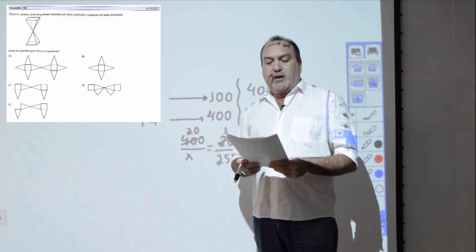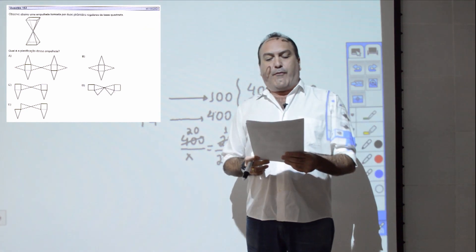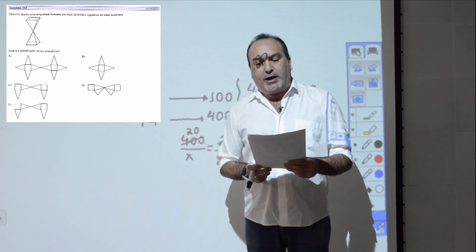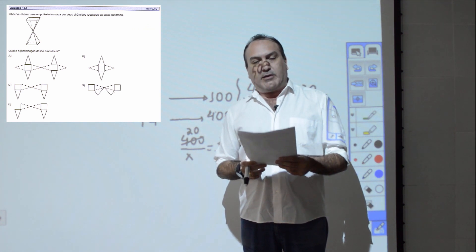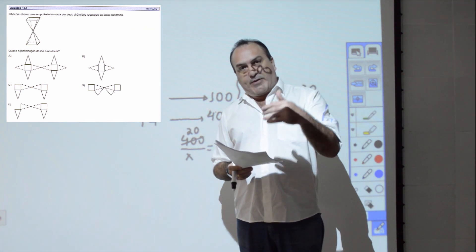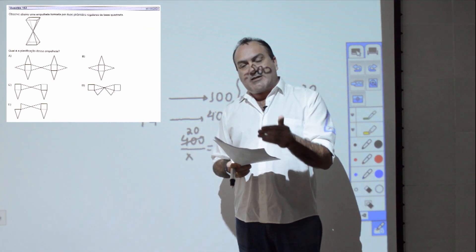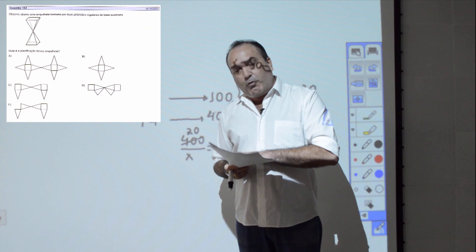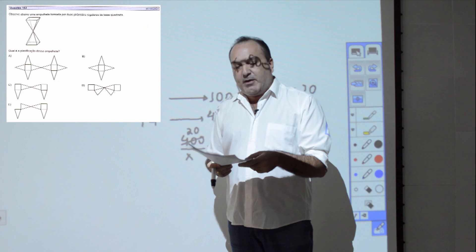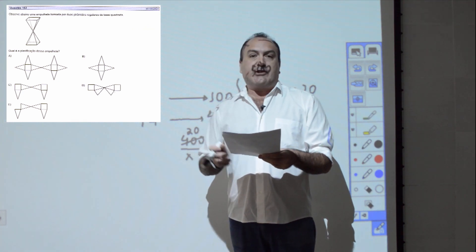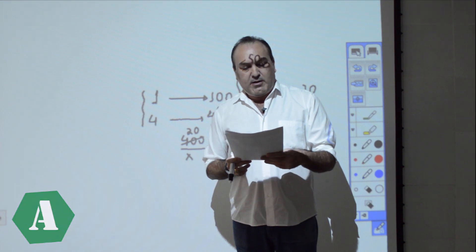Questão 162: observe uma ampulheta formada por duas pirâmides regulares de base quadrada. Qual é a planificação dessa ampulheta? Fazendo o experimento em casa, planificando as faces no plano sem descolar uma da outra, chega-se facilmente ao item A.